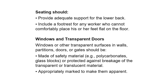Windows and transparent doors: windows or other transparent surfaces in walls, partitions, doors, or gates should be made of safety material — for example, polycarbonates or glass blocks — or protected against breakage of the transparent or translucent material, and appropriately marked to make them apparent.